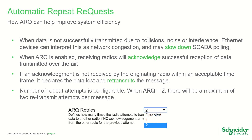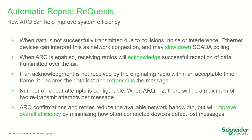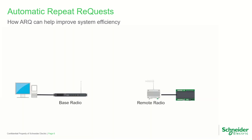For example, when ARQ is set to 2, there will be a maximum of 2 retransmit attempts per message before the message is discarded. ARQ confirmations and retries reduce the available network bandwidth but will improve overall system efficiency by minimizing how often connected devices will detect and resend lost messages and possibly slow down the system for a period of time. Here is an example of ARQ in operation.